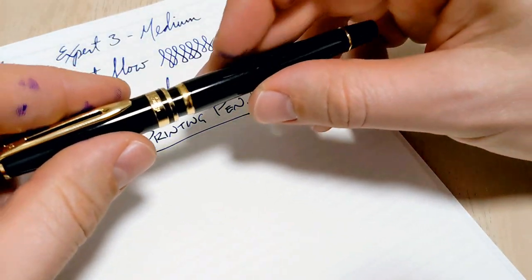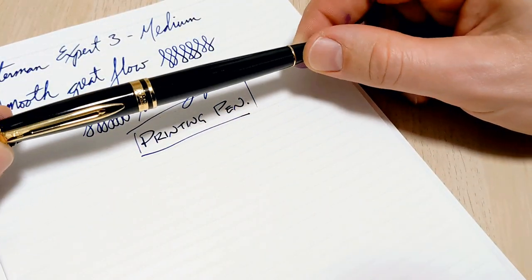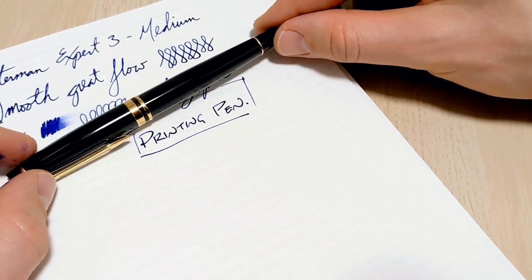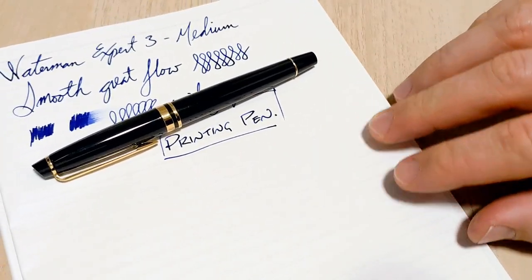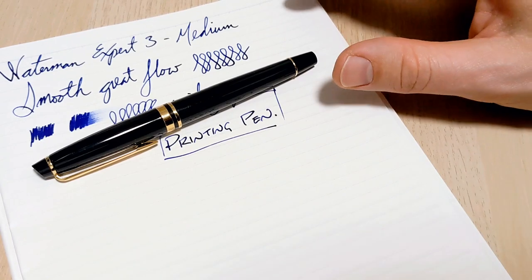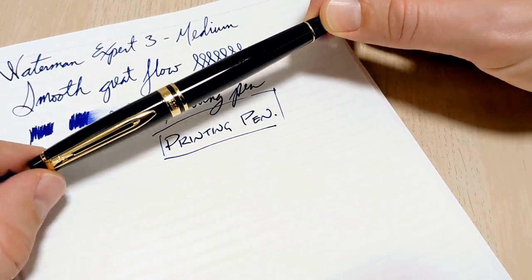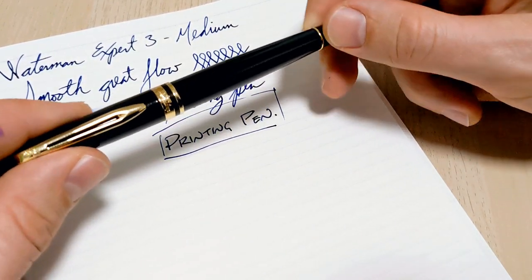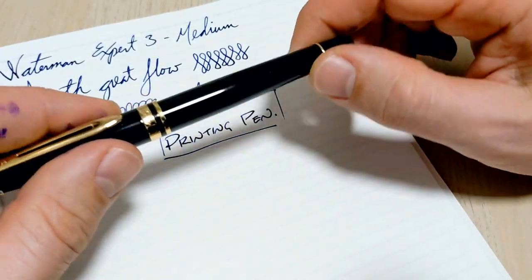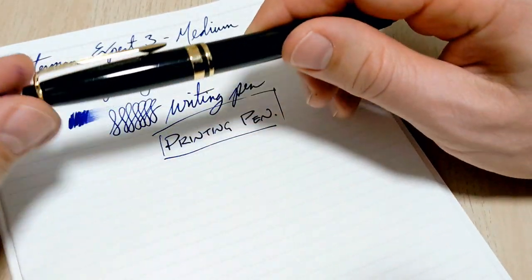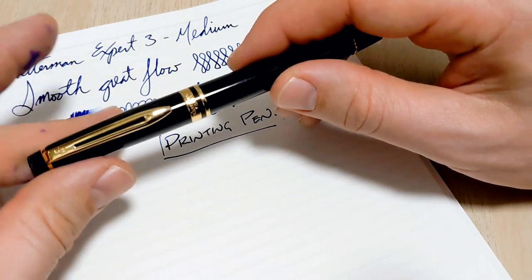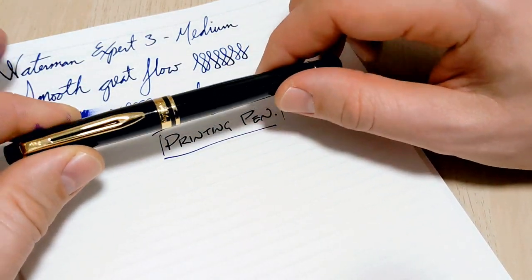But yeah, price point wise I think it's reasonable. There are other pens. Again, I'll put it in the description because I gotta write this stuff down before my videos, but I believe it was a little over a hundred dollars Canadian type of thing. So I think it's a reasonable price pen. It's very well made. The lacquer is nice. Just everything about it is really good quality. And they should be, Waterman's been around forever.